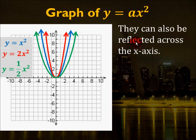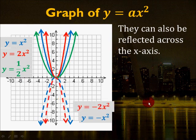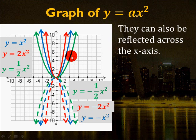We can reflect these across the x-axis. For y equals negative x squared — that's the blue graph reflected downward. With a being positive 1, the graph opens up; with a being negative 1, the graph opens down. Likewise, y equals negative 2x squared opens downward, and y equals negative one-half x squared as well. So the absolute value of a affects the width, and the sign of a determines whether the parabola opens upward or downward.